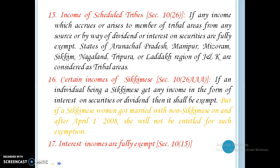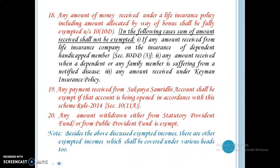Interest on certain incomes is fully exempted. Any amount of money received under a life insurance policy, including amount allocated by way of bonus, shall be fully exempted. However, in the following cases, the amount received shall not be exempted: if any amount is received from a life insurance company on the insurance of a dependent handicapped member; if any amount is received when a dependent or family member is suffering from a notified disease; or any amount received under a Keyman insurance policy. Any payment received from a Sukanya Samriddhi account shall be exempted if that account is opened in accordance with the scheme under Rule 2014. Any amount withdrawn either from a statutory provident fund or from a public provident fund is also exempted.